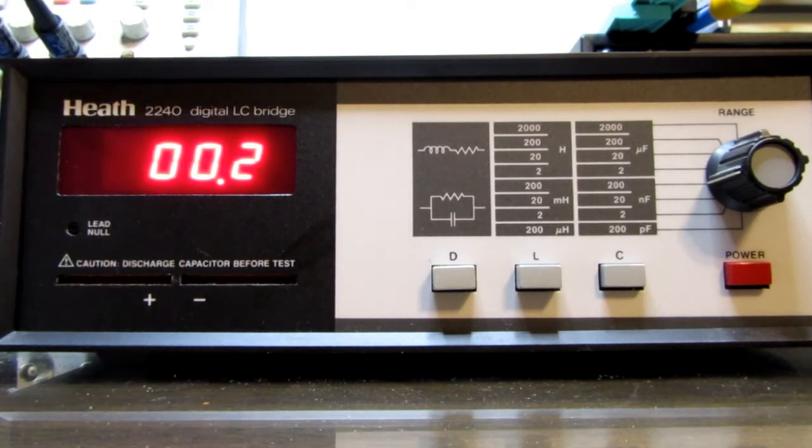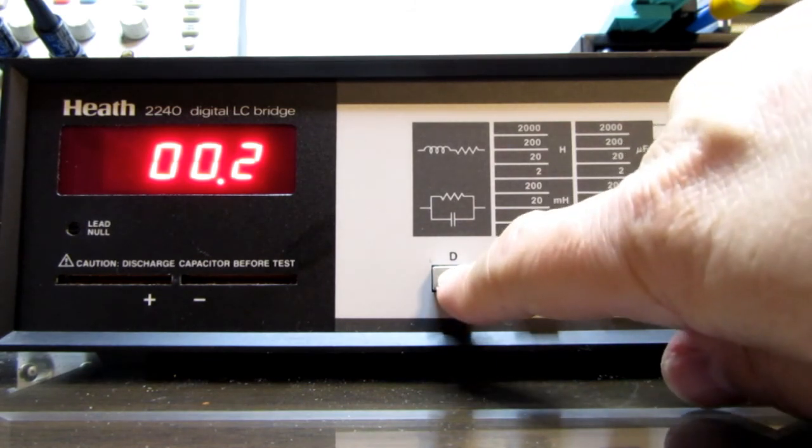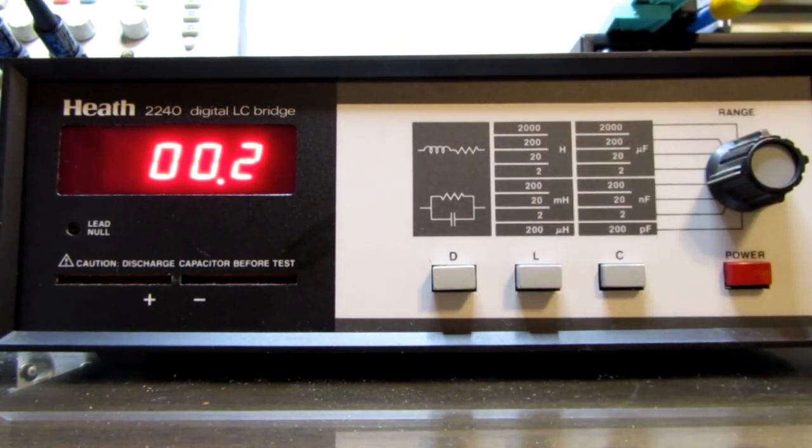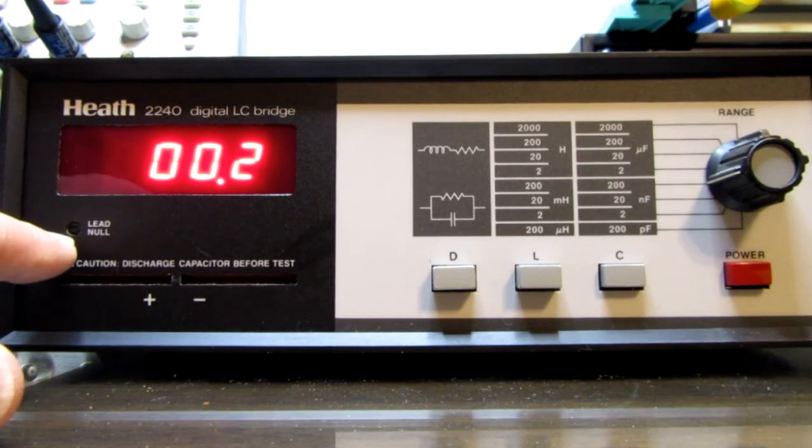Unfortunately, I don't have any inductors laying around to measure, but operation in the inductance mode is exactly the same. And I've never used the dissipation mode of this meter. And I don't recall if there's any calibration associated with it either. I think it just uses the calibrations for the inductance and capacitance modes. The lead null set screw is located right here on the front panel, so it's easy to get to if you do want to null it out.